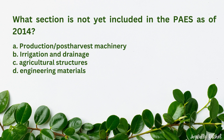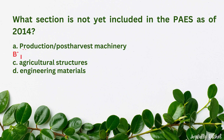What section is not yet included in the PAES as of 2014? A. Production post-harvest machinery, B. Irrigation and drainage, C. Agricultural structures, D. Engineering materials. The answer is B. Irrigation and drainage.